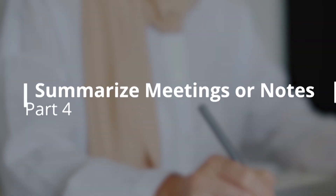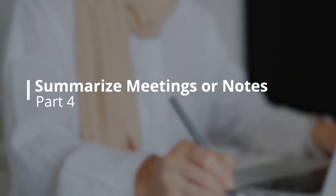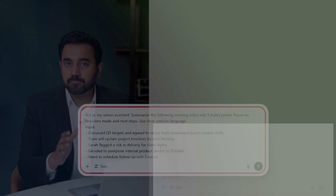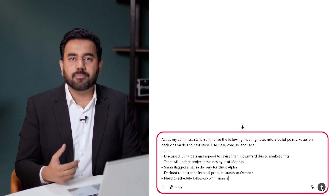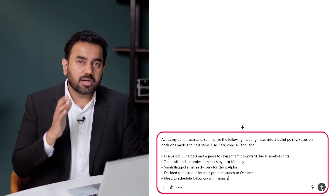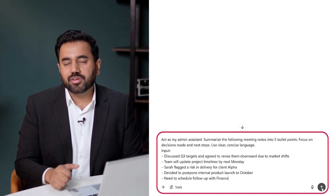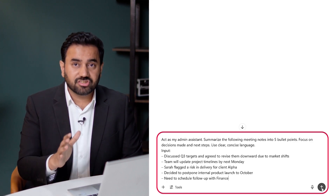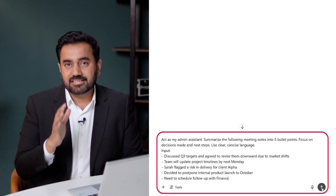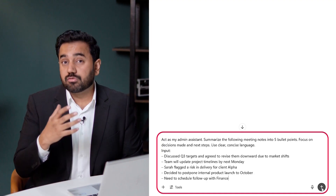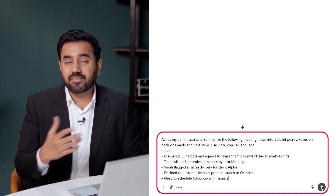After a meeting, typing up clear shareable summaries takes time. ChatGPT can do this within seconds — just give it the raw notes or transcript and prompt it clearly. Here is an example prompt: Act as my admin assistant. Summarize the following meeting notes into five bullet points. Focus on decisions made and next steps. Use clear, concise language. Here is a rough version of the notes I would paste in.